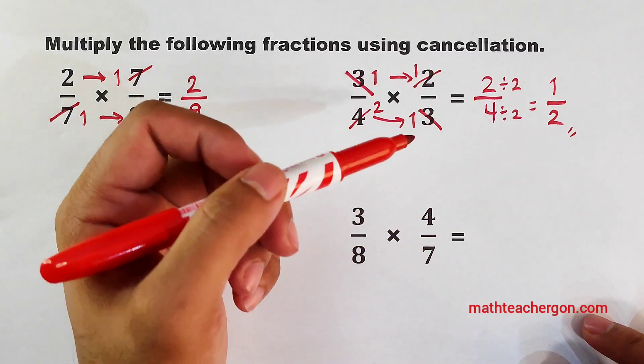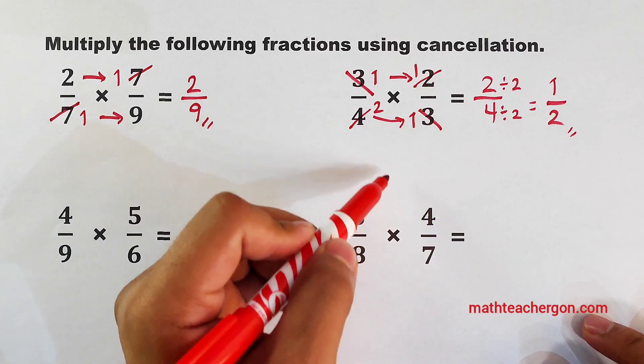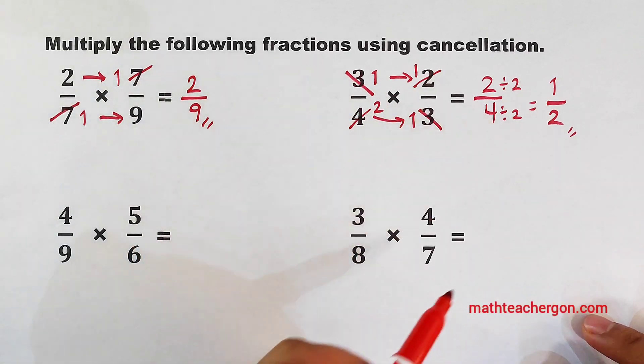Same with this one. As you can see, we have here 1 times 1, which is 1. We have here 2 times 1, which is equal to 2. We will arrive with the same answer.